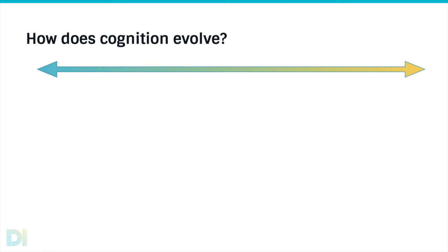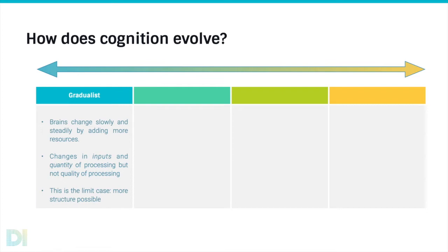So the simplest picture, and the one I think a lot of animal research often still implicitly has, is a very gradualist picture of the evolution of cognition. In this one, you've got brains changing slowly and steadily by adding more resources, more brains, more neurons, more synapses, more connections. You might have changes in the kind of inputs and the quantity of processing but not what's being done. So if you have a very simple picture where everything is associative learning, then really the only things you can change are what are the inputs, what are the sensors, how much brain is there to learn, and what are the outputs, what kind of motor actions can you have. But there's no difference in processing per se.